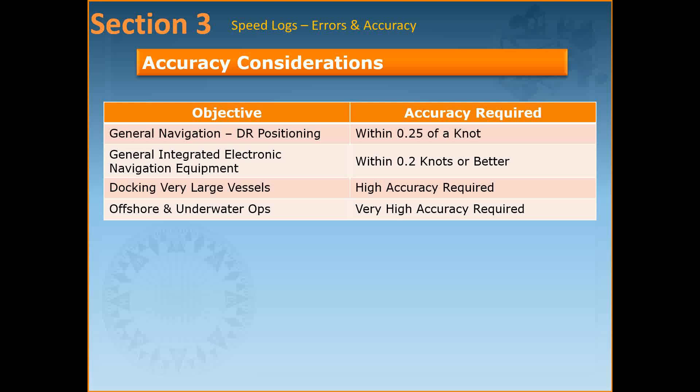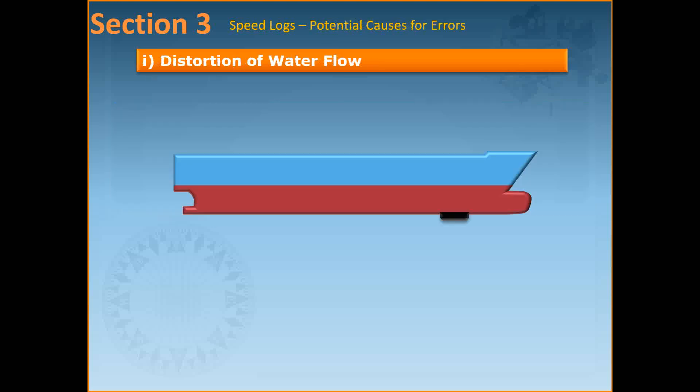Speed information used as input data to true motion radars, collision threat assessment radars, integrated navigation systems should be within 0.25 knots or better. But when it comes to docking very large vessels, especially vessels of more than 50,000 gross tonnage, or carrying out very sensitive operations of offshore and underwater operations, very high accuracy is required.